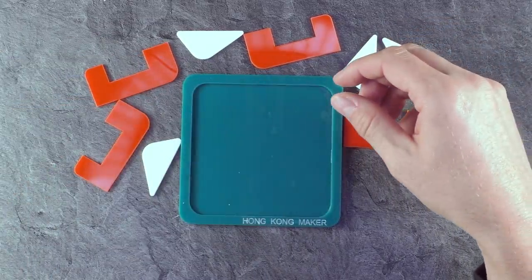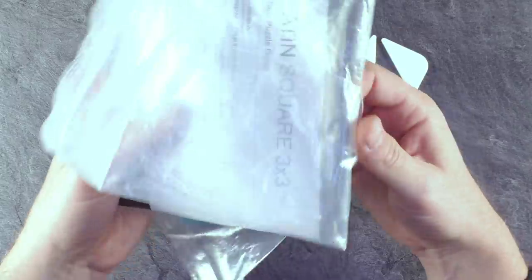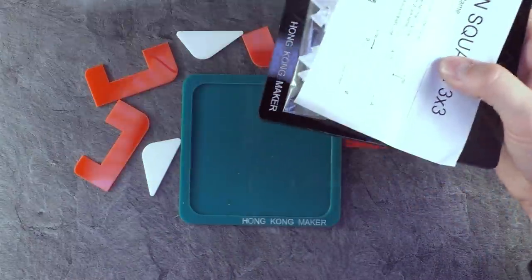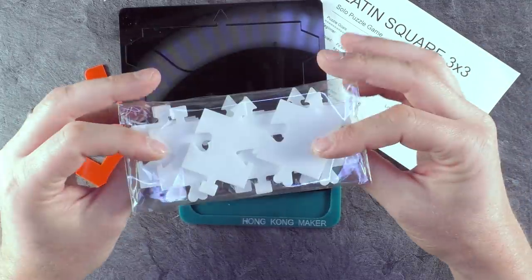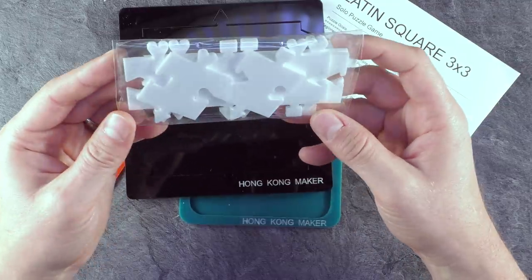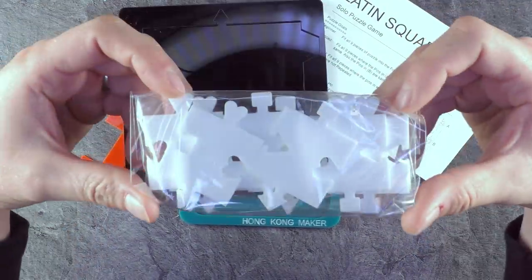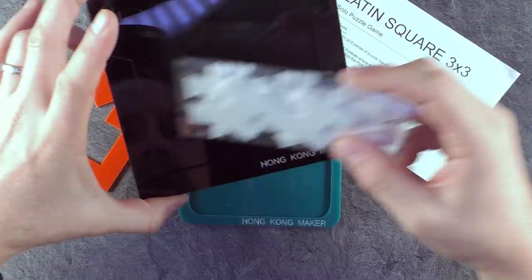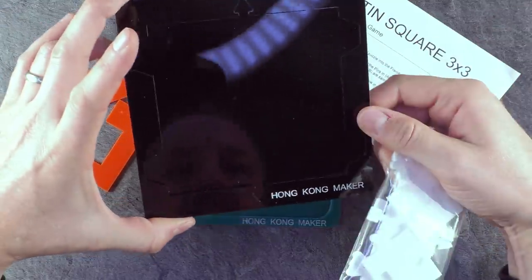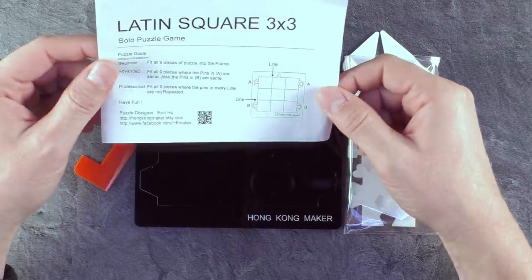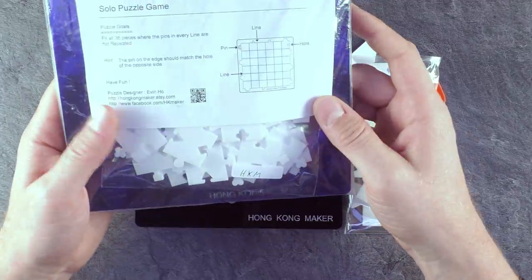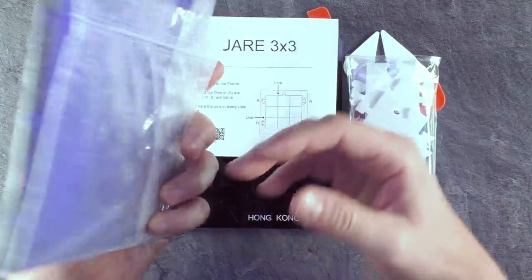Before I start with this puzzle, I would also show you some more puzzles I got from the same shop, also from the Hong Kong maker. And this one's also looking pretty cool. It's called Latin Square, and it's like a playing card themed packing puzzle where you need to fit these pieces into this frame. It has some cutouts here, looks pretty interesting. On this one you need to fit all nine pieces into this frame.